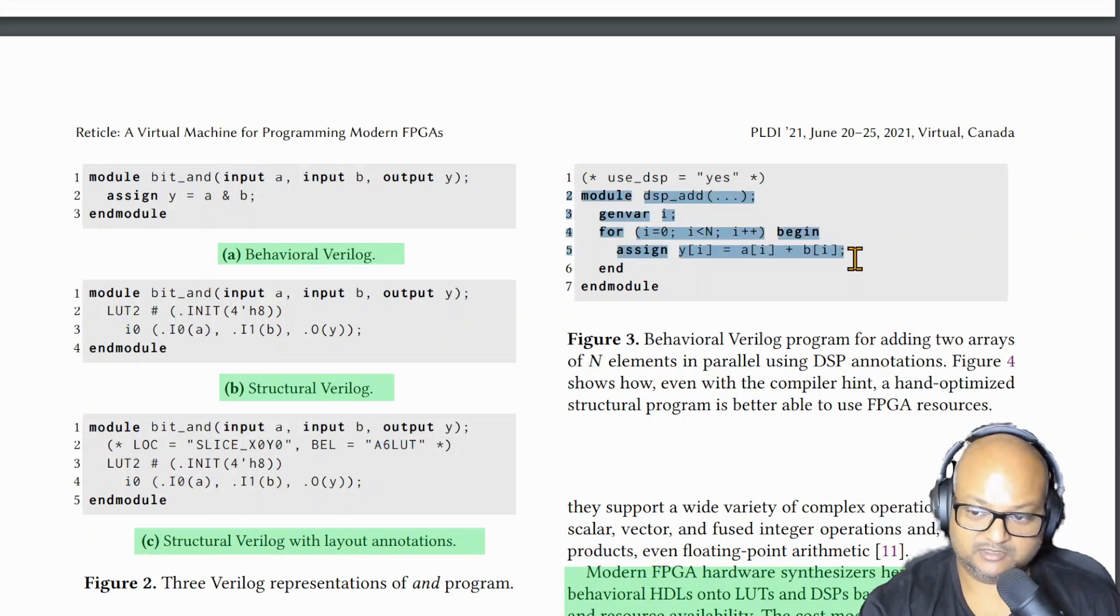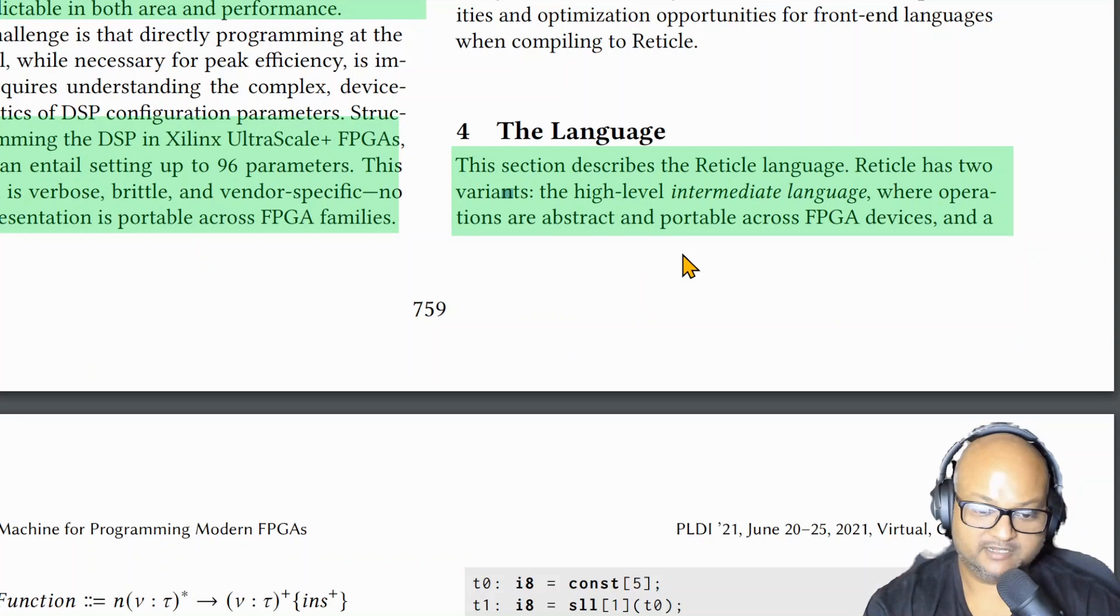In this example we are adding two vectors in Verilog and we use this hint here which tells the Verilog compiler to use the DSP that is present on the FPGA. But these kinds of hints are not always followed by the compiler and also they're not portable and very vendor specific.